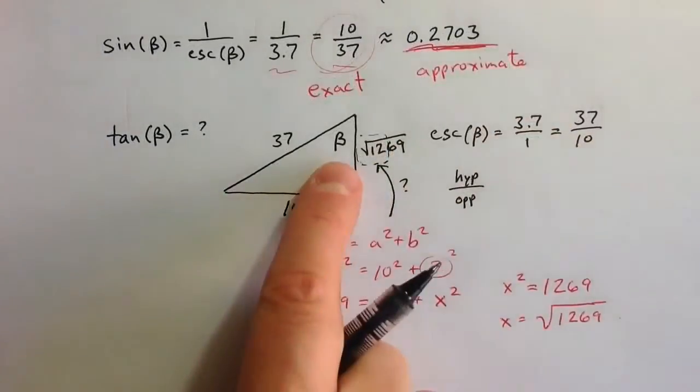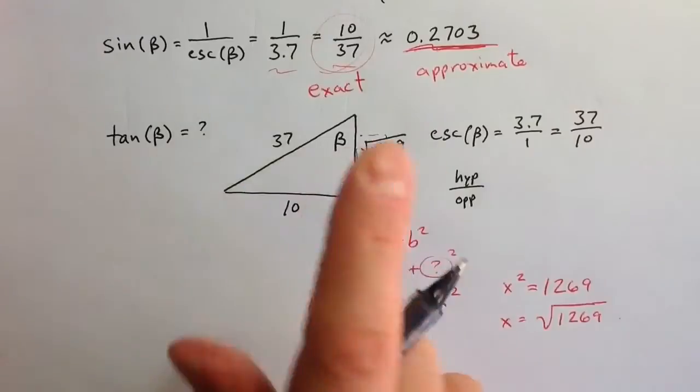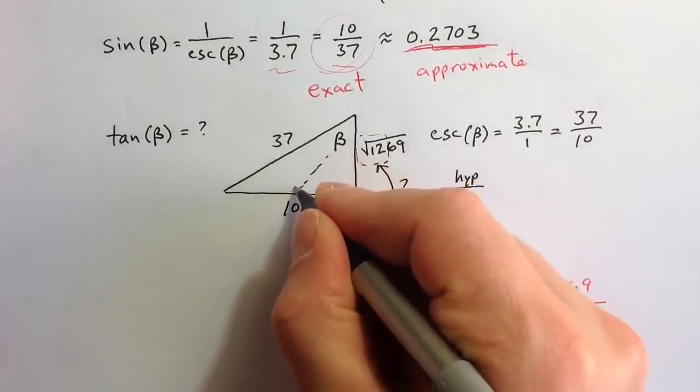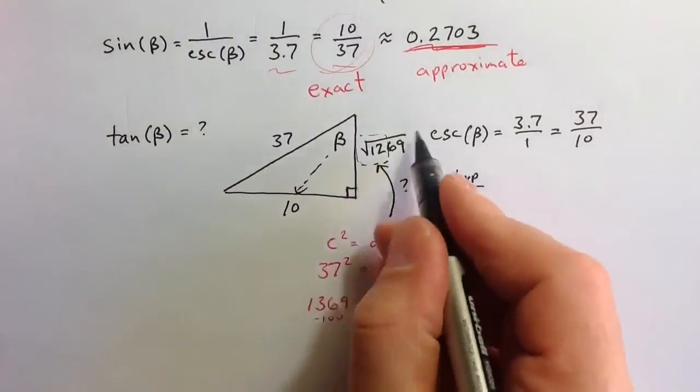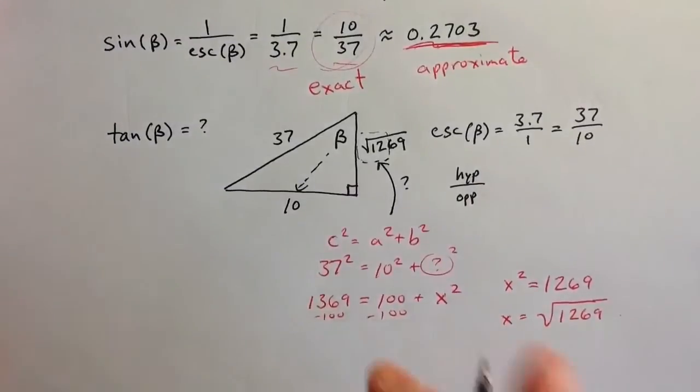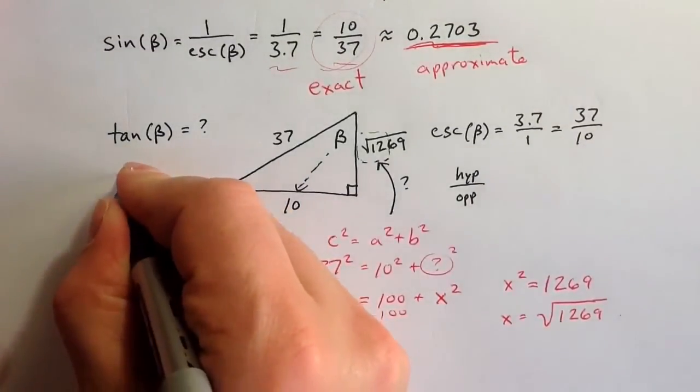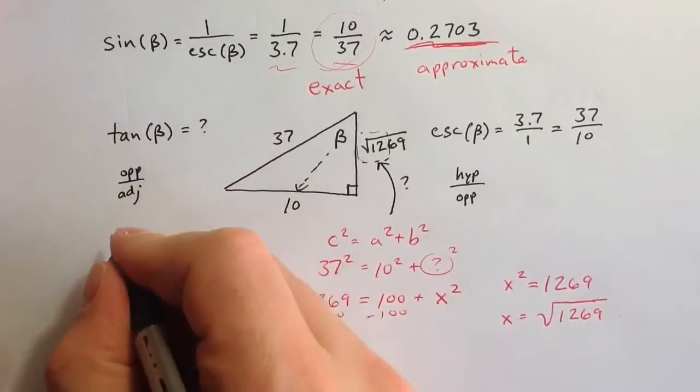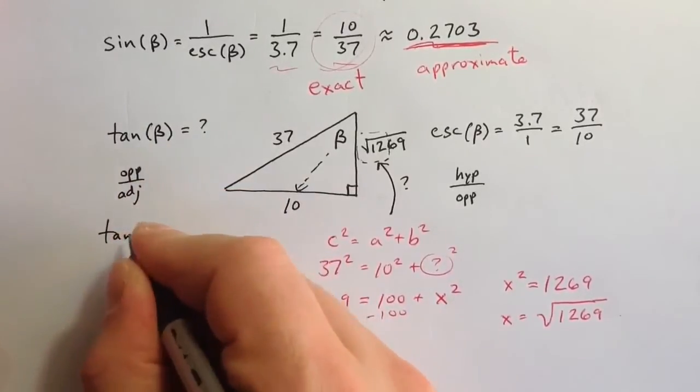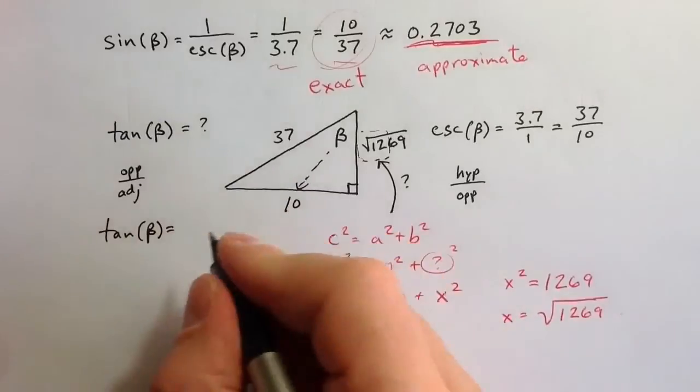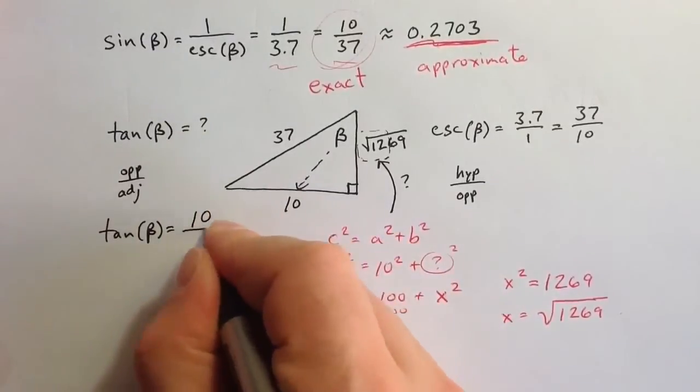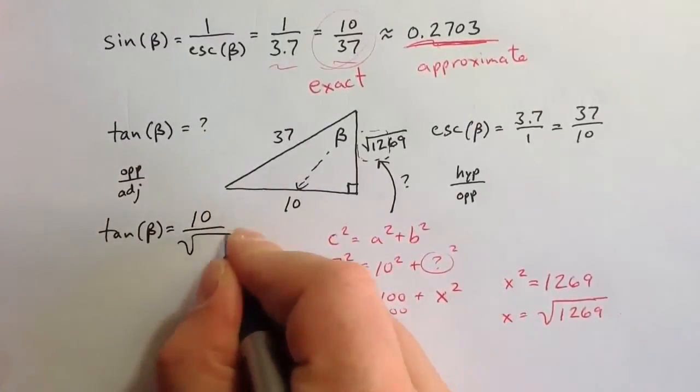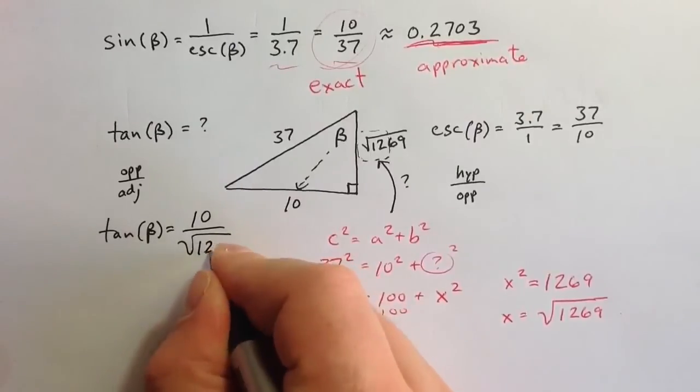Not the nicest number in the world, but this unknown side is the square root of 1,269, which means that tangent for beta, we want to take the opposite side and divide by the adjacent side. Tangent is opposite over adjacent, and tangent of beta equals 10 over the square root of 1,269.